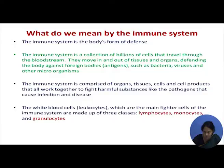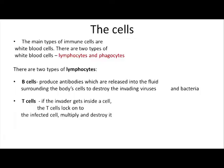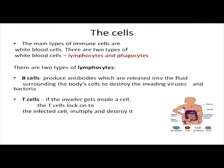When talking of lymphocytes, there are two types: B cells and T cells. The B cells produce antibodies released into the fluid surrounding body cells, destroying invading viruses and bacteria outside the cell. The T cells are more active if the invader gets inside the cell — they lock onto the infected cell, multiply, and destroy it. Unfortunately, several times these cells also work against the body's own mechanism, which we will get into later.